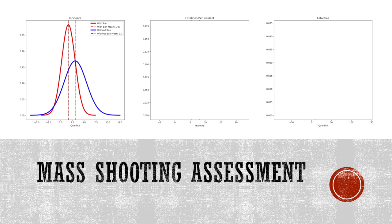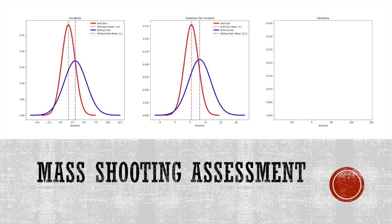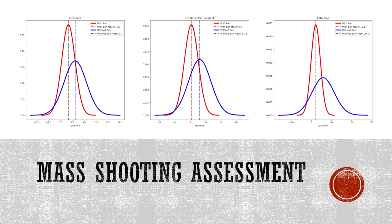For each target variable we want to know if there is a significant difference in averages in years with the ban in effect. The red curve represents years with the ban in place; the blue curve represents years without the ban. The dashed vertical lines represent the respective means of each curve. The average number of incidents per year was higher without the ban — specifically 3.1 incidents per year without the ban, but only 1.67 in years with the ban. When looking at fatalities per incident, with the ban there were 5.4 fatalities per incident, but that number jumped to above 8 without the ban — resulting in 20 fewer fatalities per year when the ban was in place.